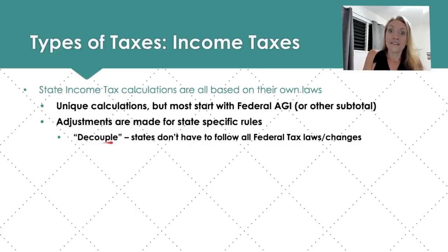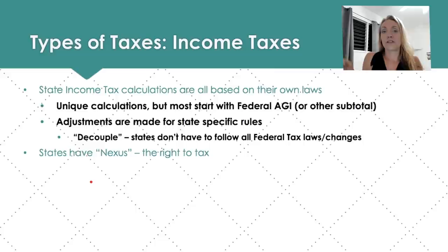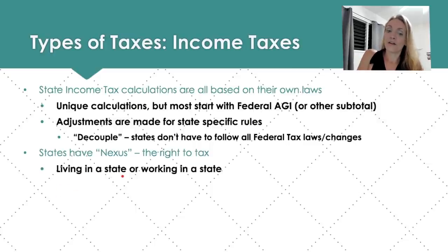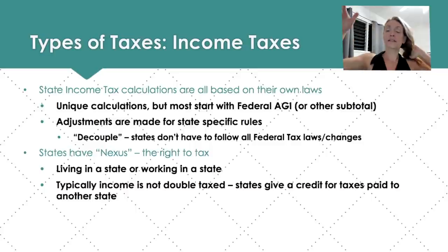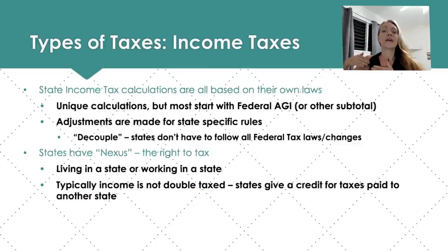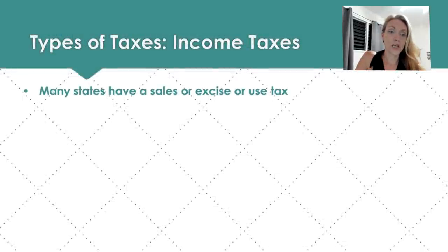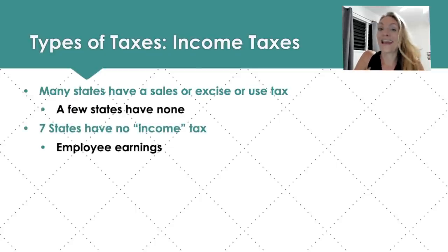What I just explained is called decoupling — states can decouple from federal tax law changes. Nexus is the state's right to tax you, based on their own constitution. Sometimes you can live and work in multiple states. Income is typically not double taxed — states will give you credit for taxes paid to another state. Many states have sales, excise, or use taxes. A few have none. Seven states have no income tax.